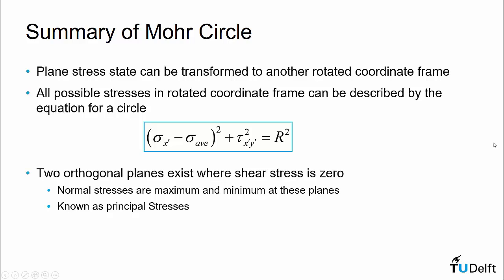We also saw that there were two orthogonal planes that existed where shear stress is zero. So that's where the Mohr's circle intersects the normal stress axis. The two normal stresses on this axis are known as the principal stresses, and they will become very important in predicting material failure later on in the course.